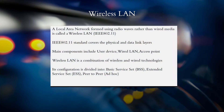A local area network formed using radio waves rather than wired media is called a wireless LAN. It is standardized under 802.11 by IEEE. Its coverage ranges between a few feet and a few hundred feet. IEEE 802.11 standard covers the physical and data link layers. The main components of a wireless LAN include user device, wired LAN, and access point.